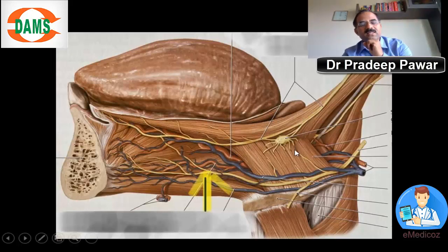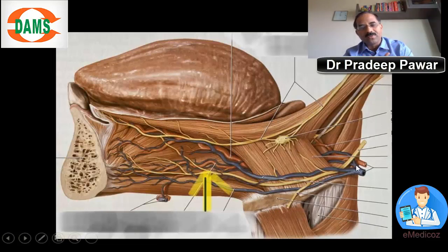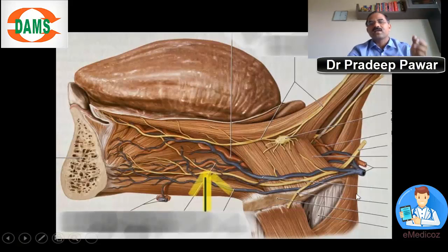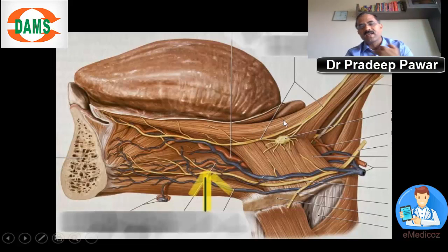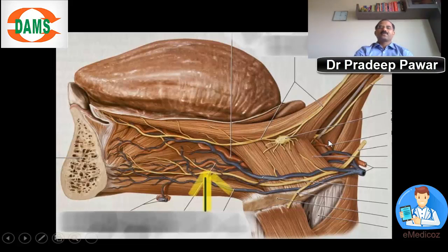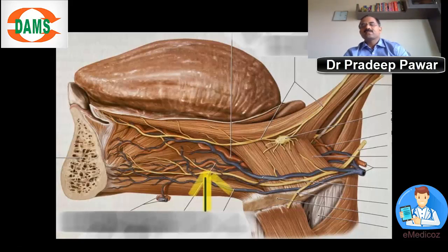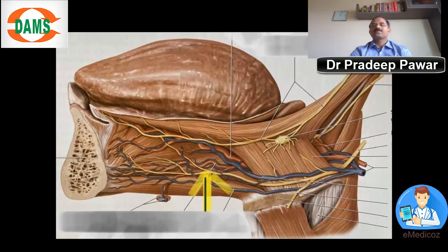This is the hyoglossus, this is the thyrohyoid muscle, and this is the hyoid bone. Beginning from the hyoid is a constrictor muscle of the pharynx — the middle constrictor, and below that the inferior constrictor. This muscle arising from the styloid process and going to the tongue is the styloglossus, and this would be the stylopharyngeus, which passes between the superior and middle constrictor muscles.